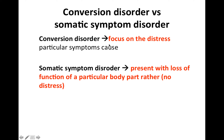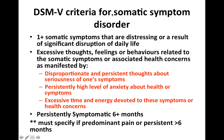In terms of the DSM-5 criteria for somatic symptom disorder: first, you need more than one somatic symptom that is distressing or results in significant disruption of daily life. Second, they need to have excessive thoughts, feelings, or behaviors related to the somatic symptoms or associated health conditions, as manifested by disproportionate and persistent thoughts about the seriousness of one's symptoms, persistently high level of anxiety about health or symptoms, excessive time and energy devoted to these symptoms or health concerns, and being persistently symptomatic for more than six months.